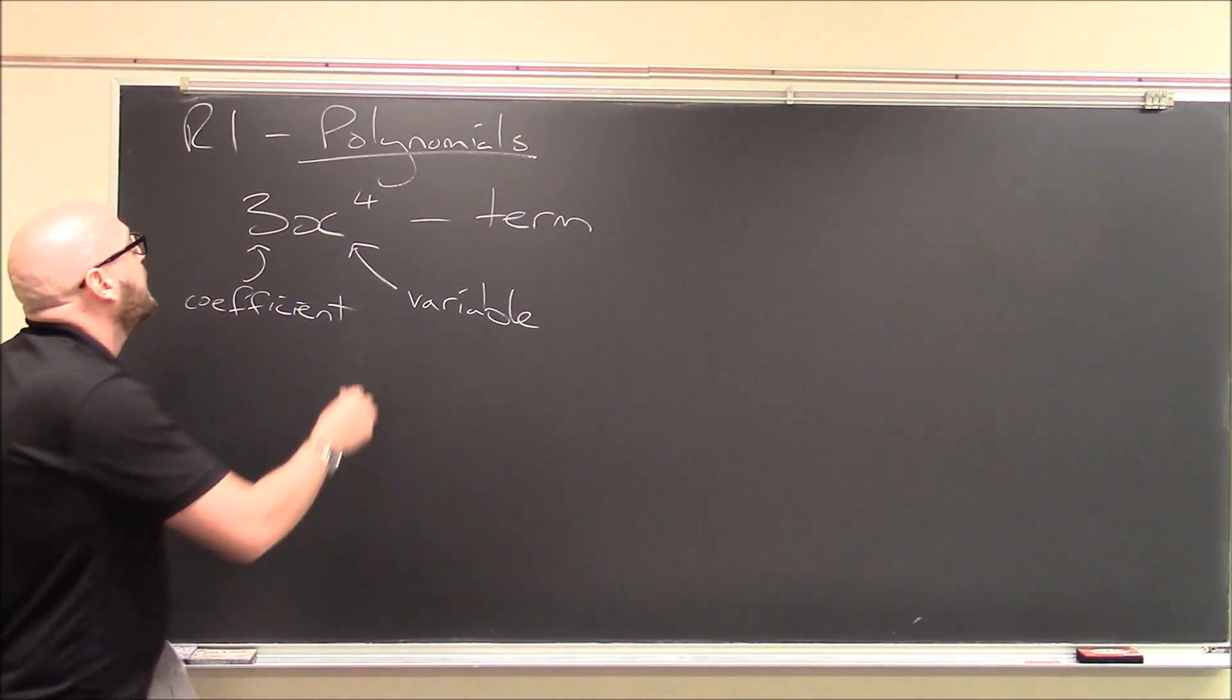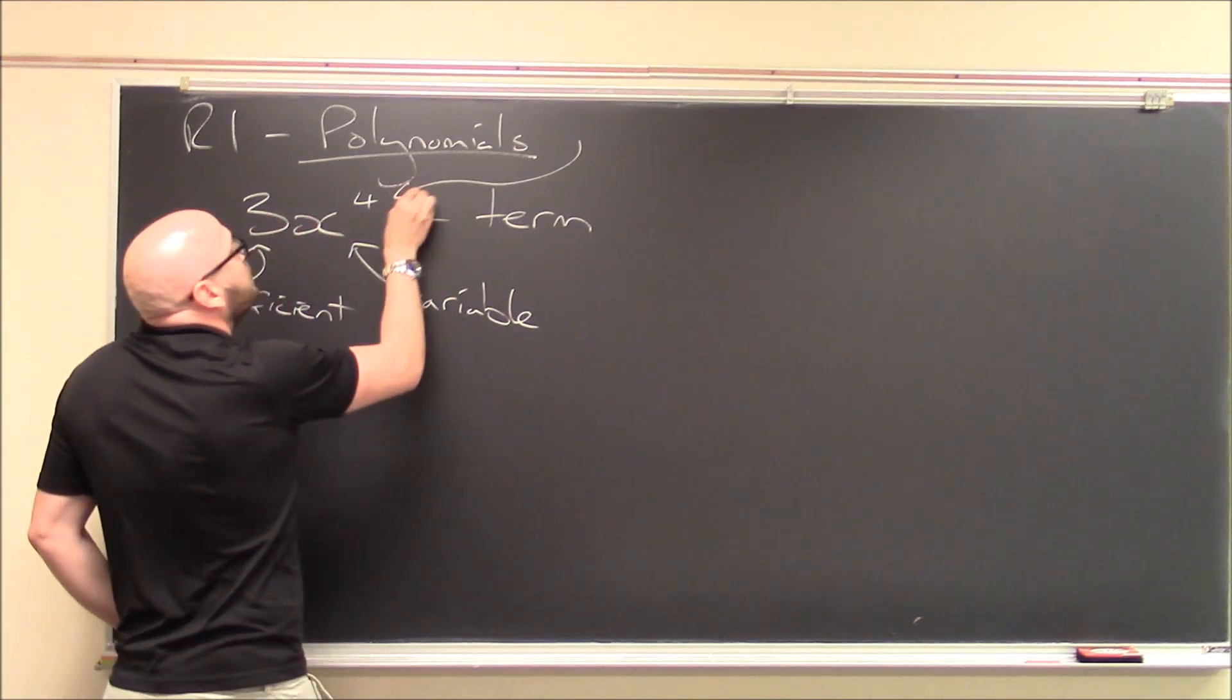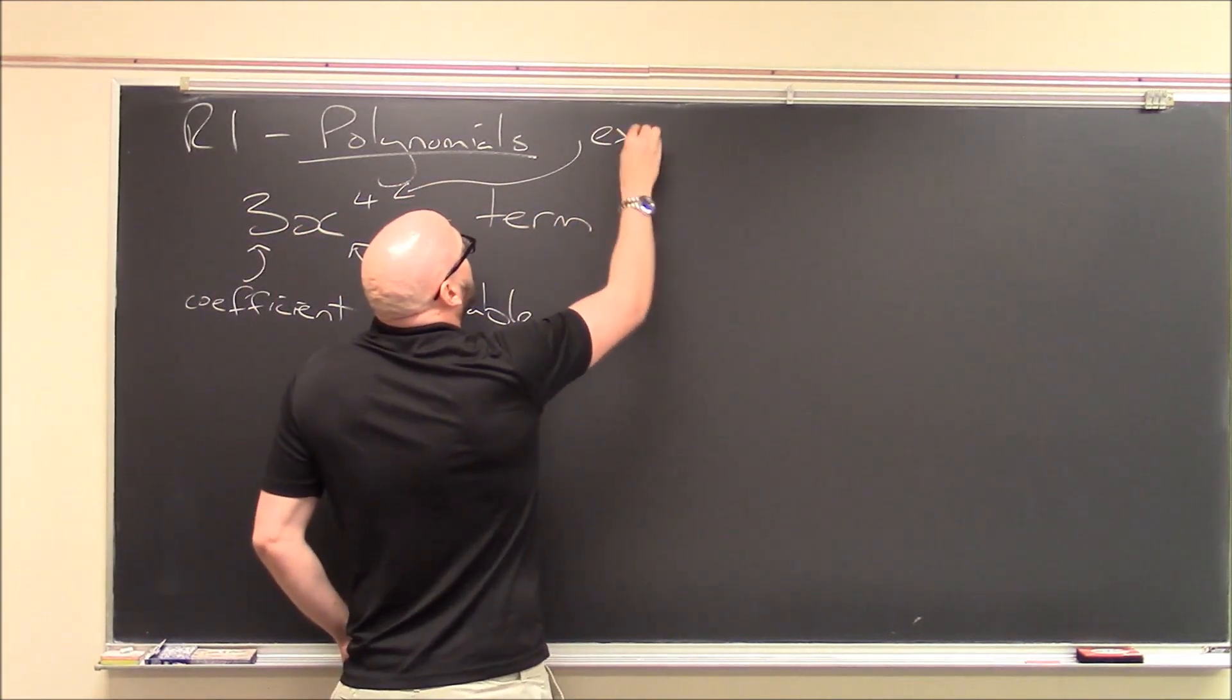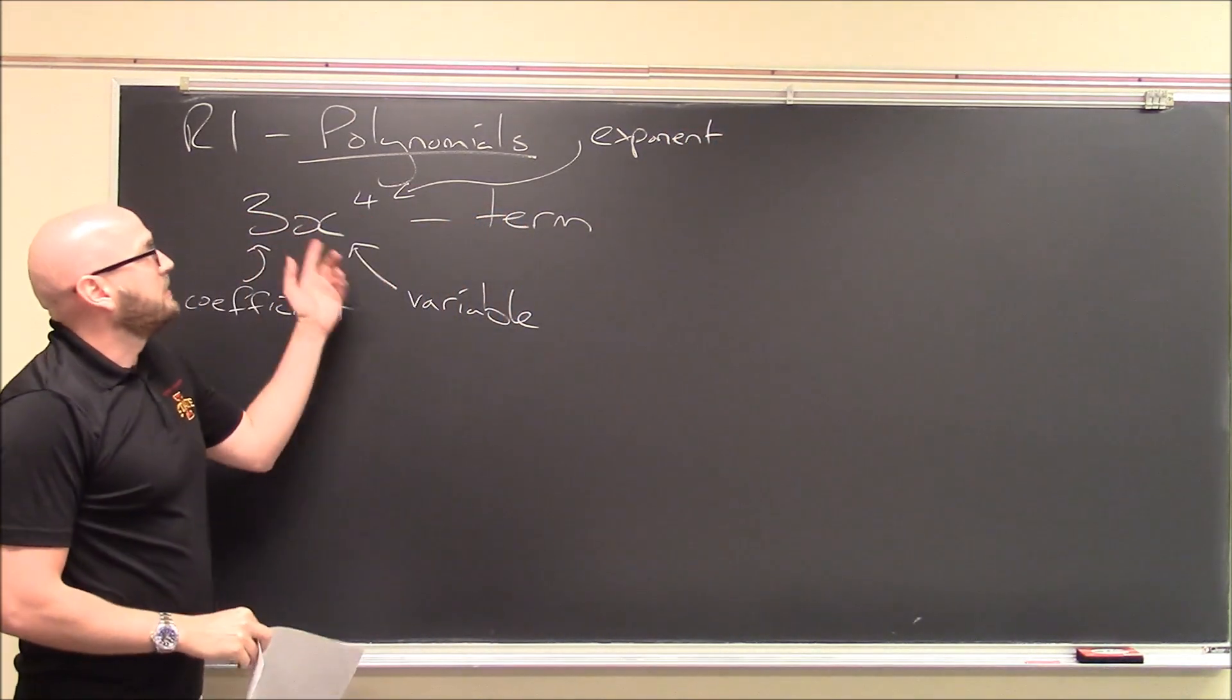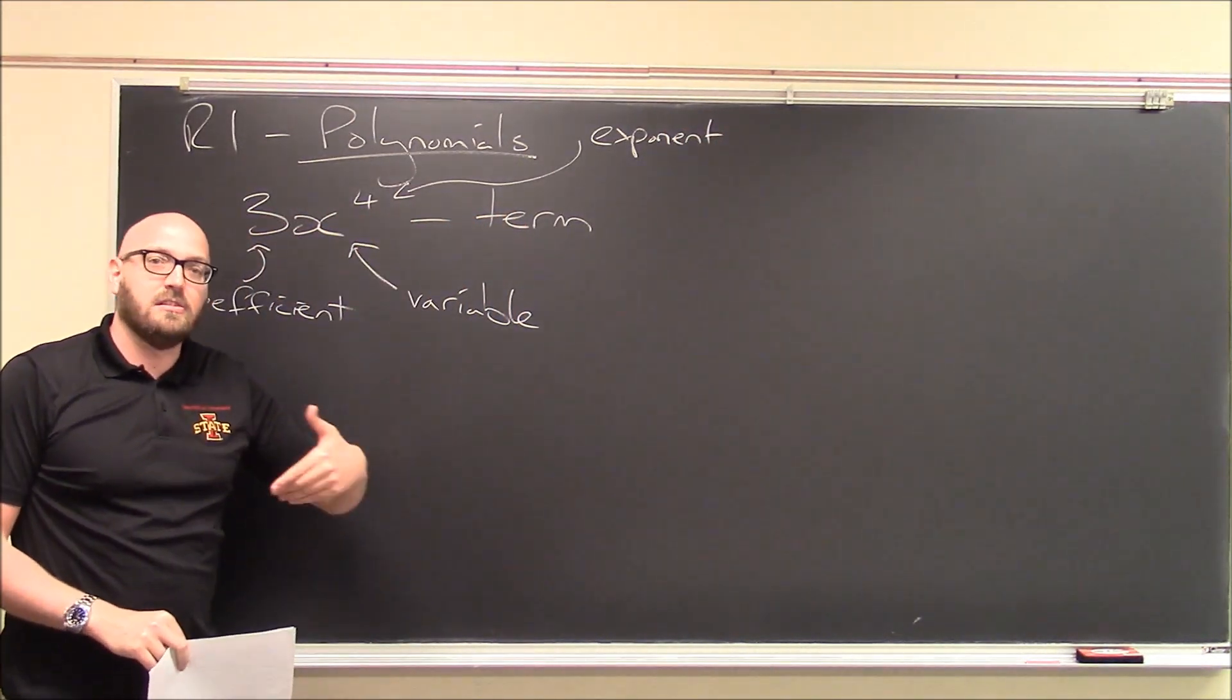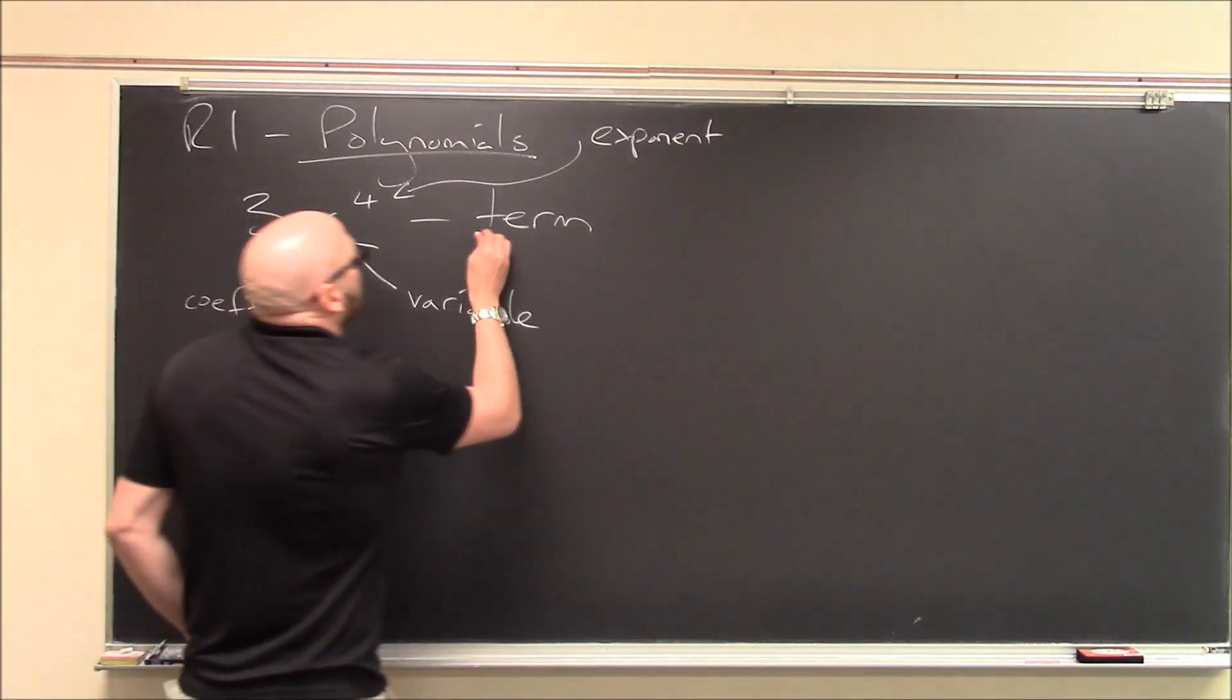This can be any number at all. And then the 4 here, I'm running out of space, but the 4 is the exponent. So x to the 4th means x times x times x, x times itself four times. So this is a term.